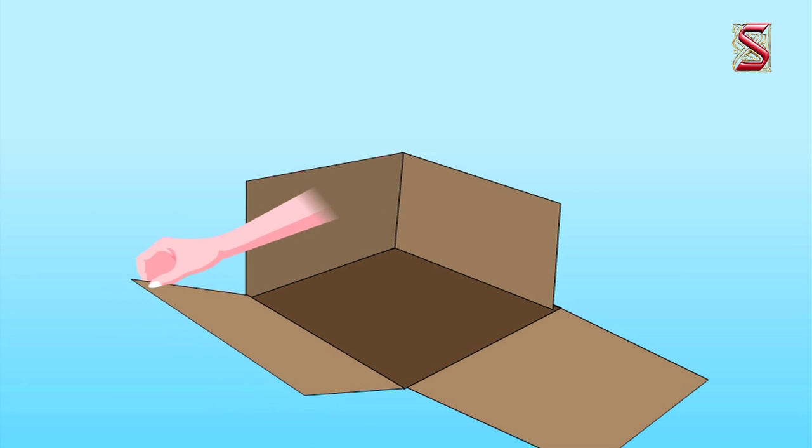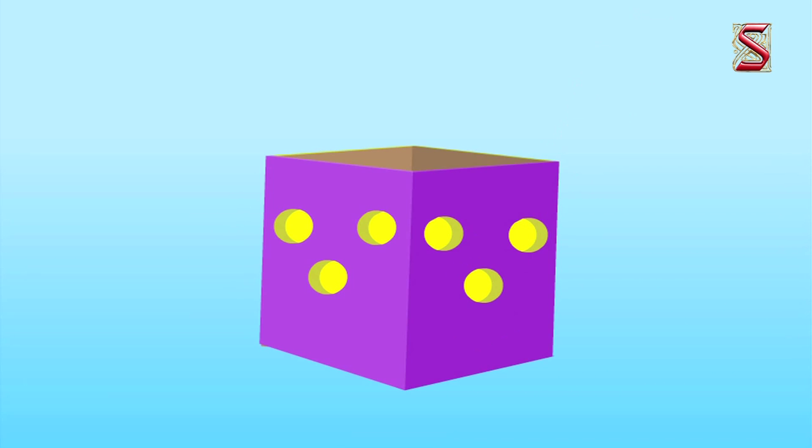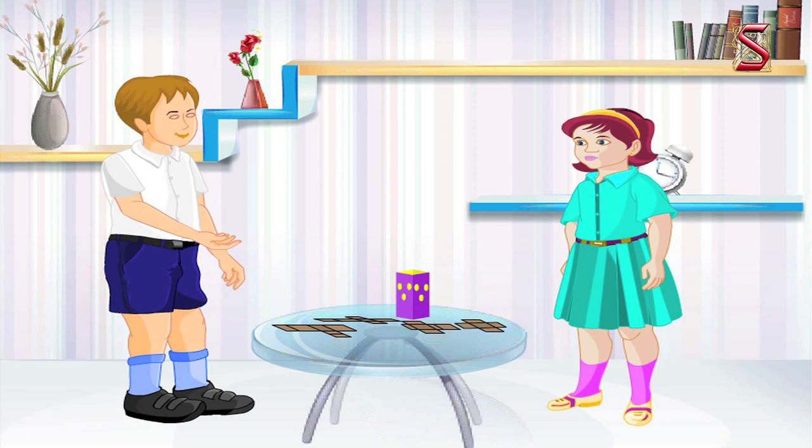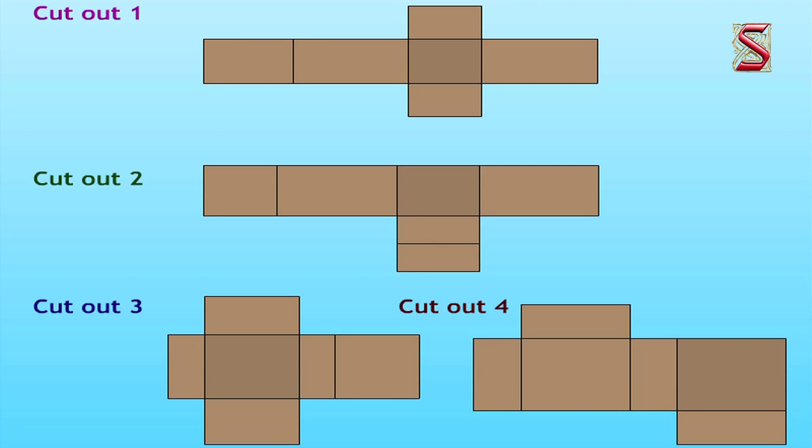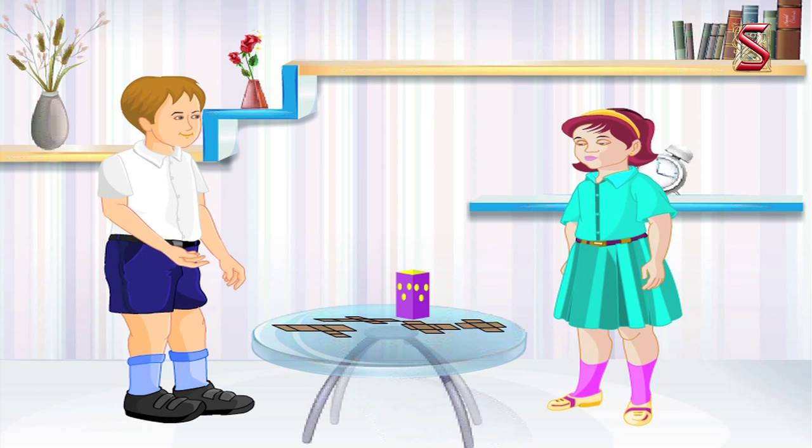Ravi makes some more such cutouts and asks Rami to fold them appropriately to check if boxes can be formed out of these or not and make boxes.